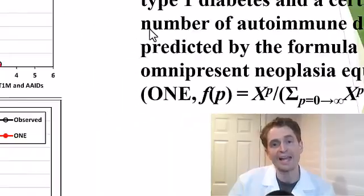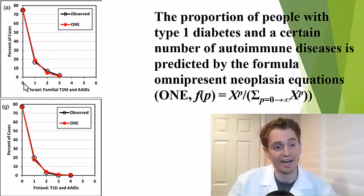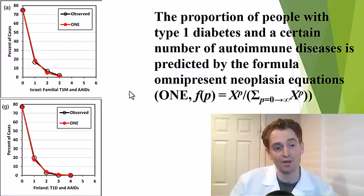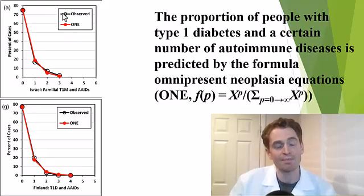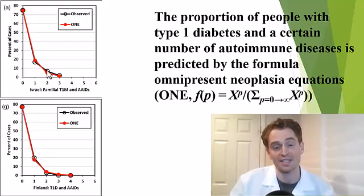He starts off with epidemiology — the risk of getting multiple autoimmune diseases. It turns out people with type 1 diabetes are more likely to get a second autoimmune disease, such as lupus. This looks at the proportion of people with type 1 diabetes who also have either 0, 1, 2, 3, or 4 other autoimmune diseases, across different countries — the top graph is in Israel and the bottom graph is in Finland.